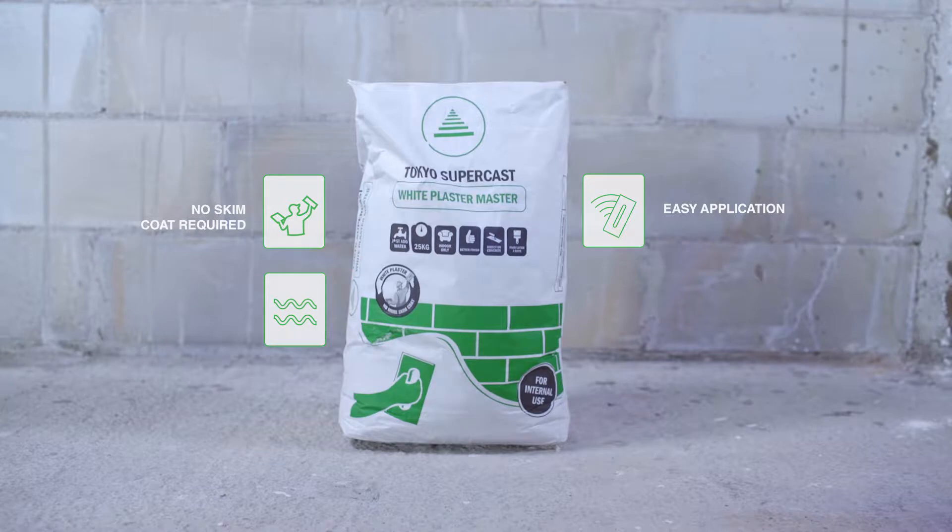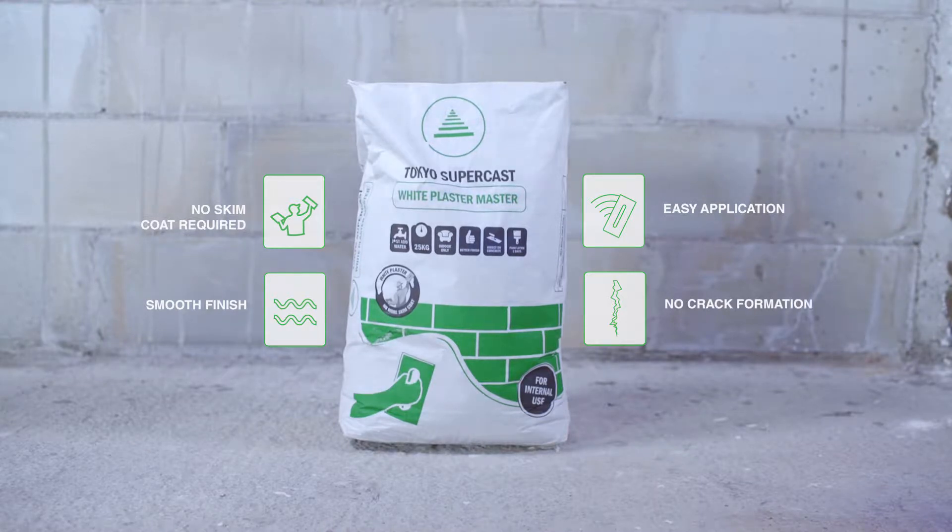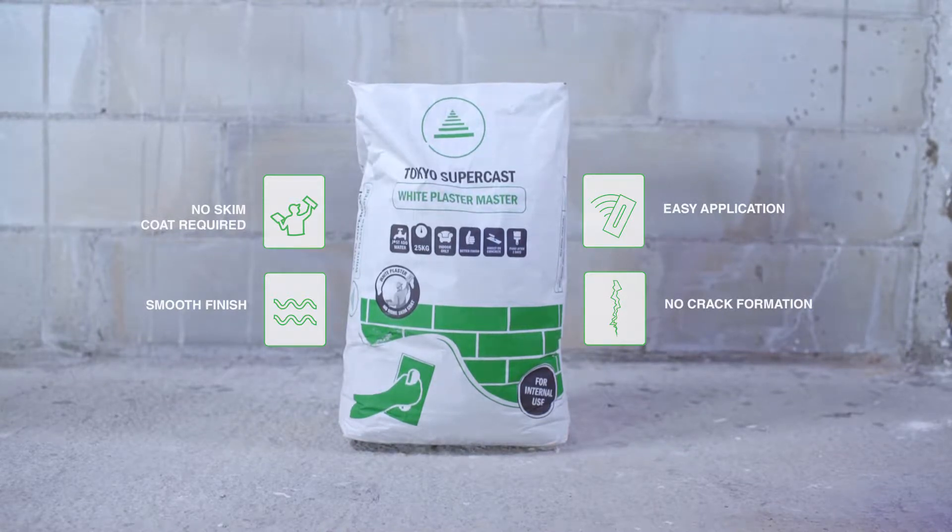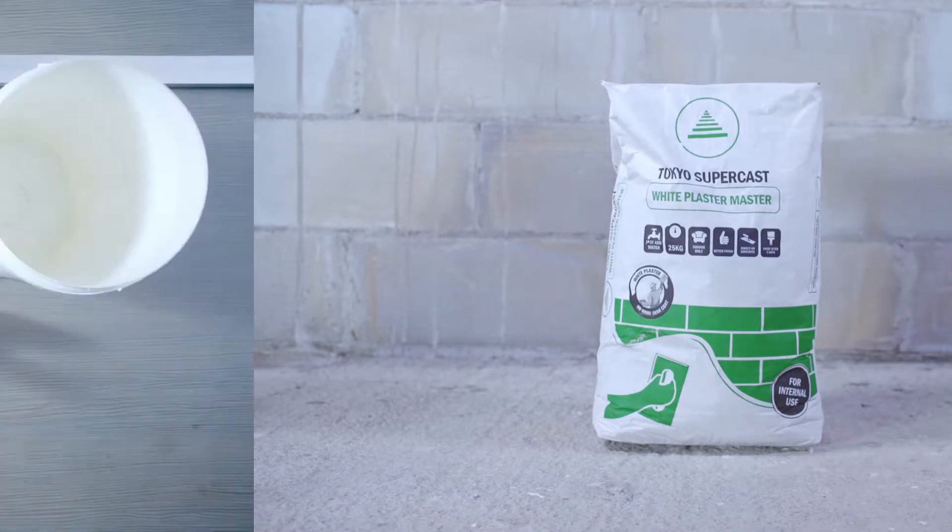Tokyo Supercast White Plaster Master uses a proprietary technology that cuts out the need for purchasing, transporting, mixing loose materials and reduces material waste. Its superior quality and workability makes it the most consistent and cost-effective way to have a ready-to-paint wall.